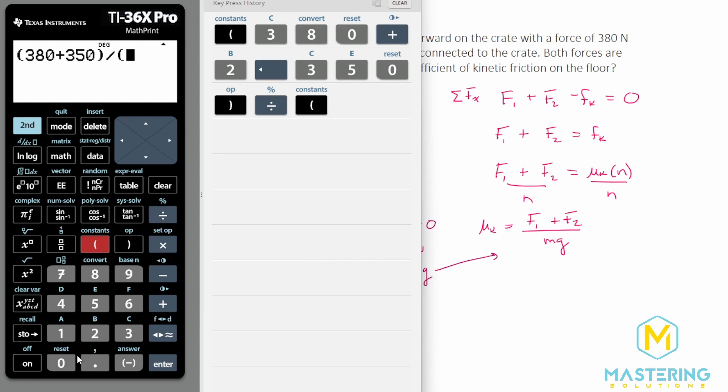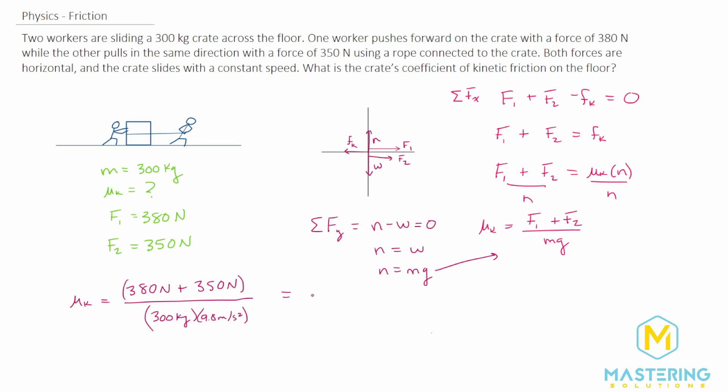We have 380 plus 350 divided by 300 kilograms times 9.8 meters per second squared. So the coefficient of kinetic friction for the crate sliding across this floor is 0.25, and the coefficient of kinetic friction mu sub k does not have any units. Here's your answer: 0.25.